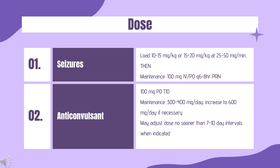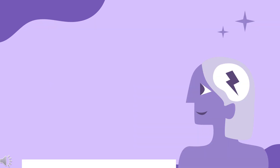Treatment-naive patients: 100 mg PO TID initially. Dose may be adjusted no sooner than 7–10 day intervals. Therapeutic range: 10–20 mg/mL total, or 1–2 mg/mL free drug.